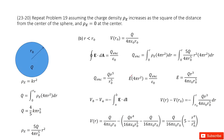Now we look inside the sphere, where r is smaller than r-naught. We draw a Gaussian surface to find the electric field inside. Similarly, E times the Gaussian surface equals the enclosed charge divided by epsilon-naught. To find the enclosed charge, we integrate the charge density times 4πr² dr from 0 to r. Substituting rho-e inside, we find the enclosed charge and then get the electric field function inside the spherical object.